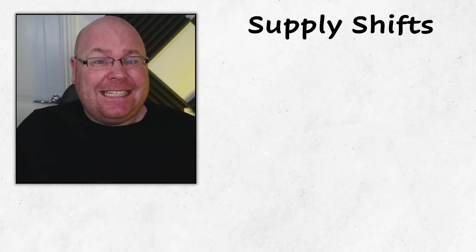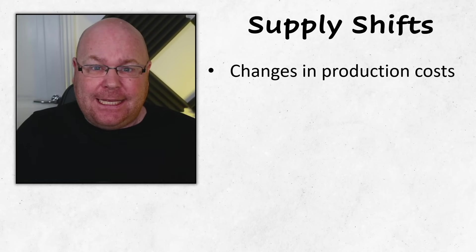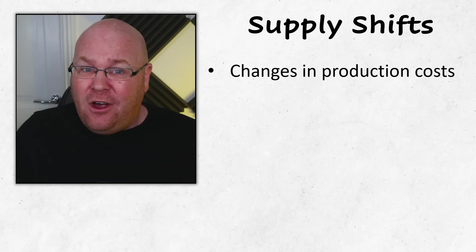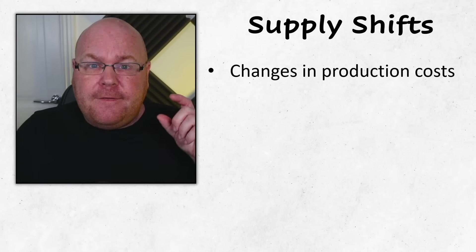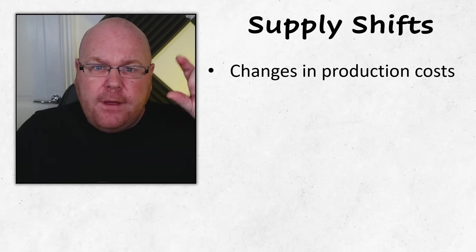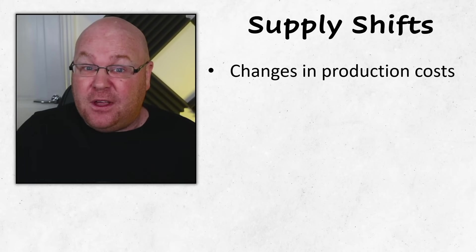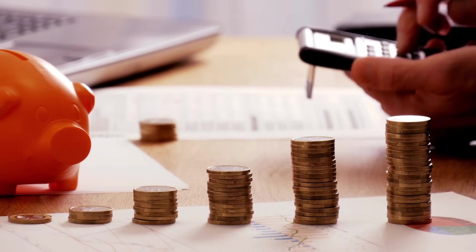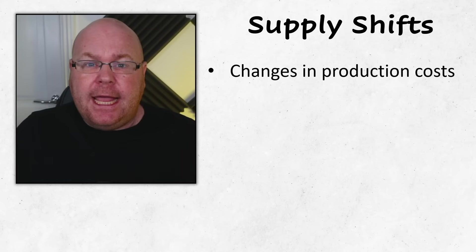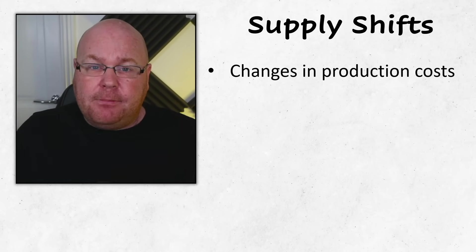One of the most common factors that might cause producers to be less willing to produce is changes in their costs. If the price a firm is selling at remains constant but manufacturing costs are rising, profit margins per sale will be squeezed, making it a less attractive proposition to manufacture goods. But the opposite is also true — if production costs are falling, firms will want to produce more even though the selling price is the same, because they can now make greater profits per sale.